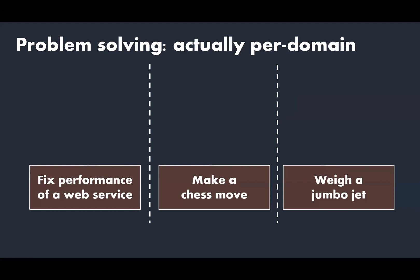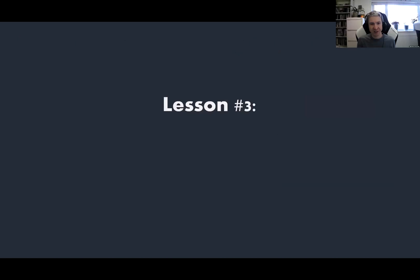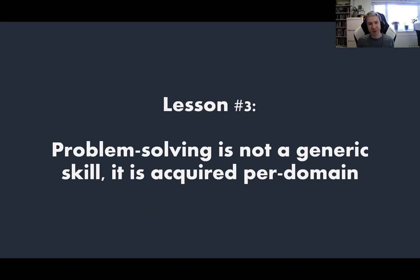How it actually works is that we have totally separate domains and we learn problem solving per domain. So if you want to fix the performance of a web service, then you learn how to solve that problem. But your knowledge is specifically constructed around that domain and your problem solving ability is based in that domain. It's then separate to how good you are at making a chess move and separate again to how good you are at brain teaser problems. So learning one won't improve the other and testing one won't necessarily reveal very much about one of the others. This leads to our third lesson, which is that problem solving is not a generic skill that's applied across all different domains. It's actually acquired per domain through practicing on that domain.